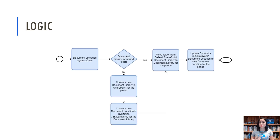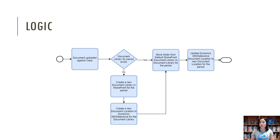In terms of the logic, we're first going to check that the document library for the period exists whenever a document has been uploaded against a case record. If it does not exist, we want to create a new document library in SharePoint for that particular period, and then create a document location record in Dynamics 365 that represents that newly created document library. Where the document library already exists for the period, the folder — the document location — would move away from the default setup into the existing document library for that period, such as case 2019, and we update the document location row in Dynamics 365 to point to the document library representing that period.